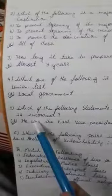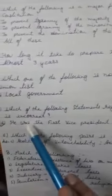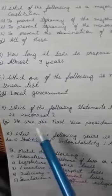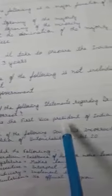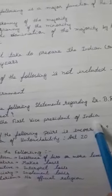Fifth question: which of the following statement regarding B.R. Ambedkar is incorrect? The answer will be option D — he was the first Vice President of India.